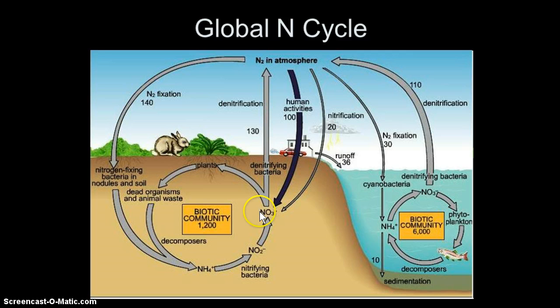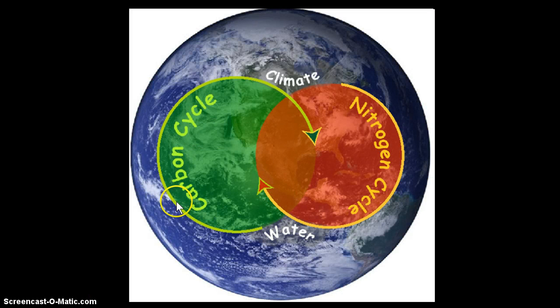But since it's organisms that are growing and dying and consuming each other to change this nitrogen, it's intricately linked with the carbon cycle that we've talked in much more detail about. So without this nitrogen cycle, we don't get most of this carbon cycle. And without the carbon cycle, we don't get most of the nitrogen cycle.